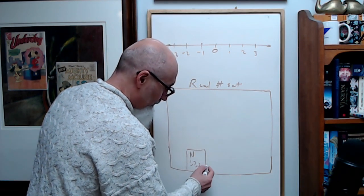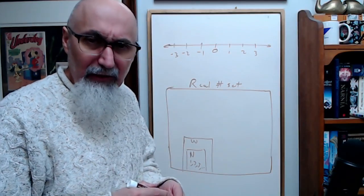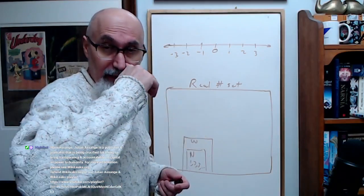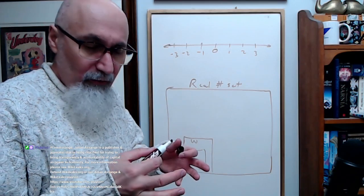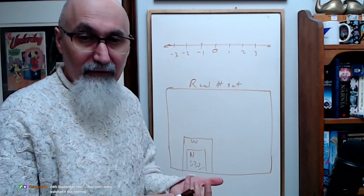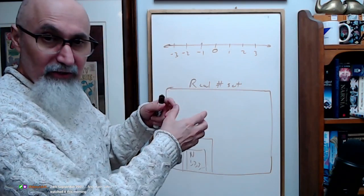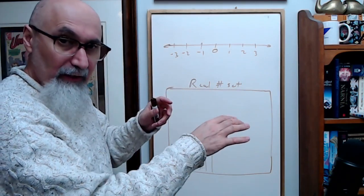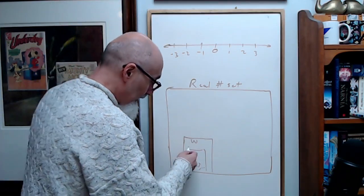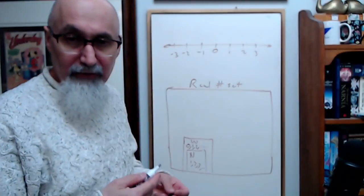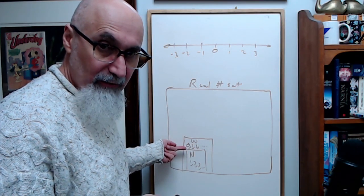Then some mathematician in India defined the number zero, and it was a huge leap in human evolution — like the discovery of fire for mathematics. Zero has a major problem: we can't divide by zero, the universe explodes. But it has major power: if we set an equation equal to zero, we can factor and split things into factors equaling zero, making solving equations much easier. So we call this new category the whole number set — it includes the natural numbers plus zero.